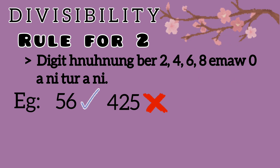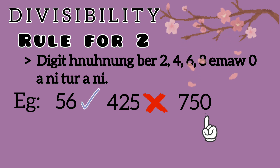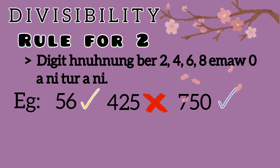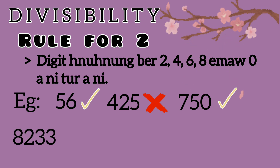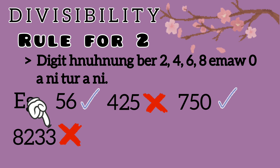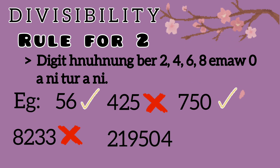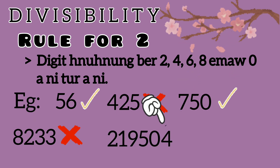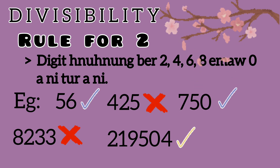Example: 750. The last digit is 0. 0 is in 2, 4, 6, 8, 0, so 750 is divisible by 2. Also, looking at the number 8, 2, 3, 3 — and another number: if you read 4 digits, it is divisible by 2.